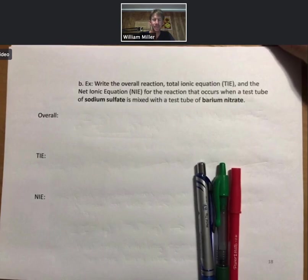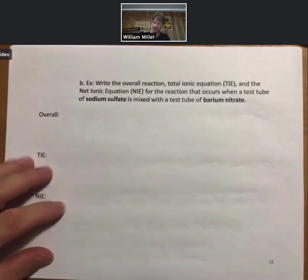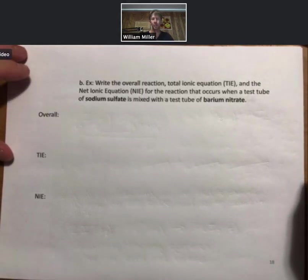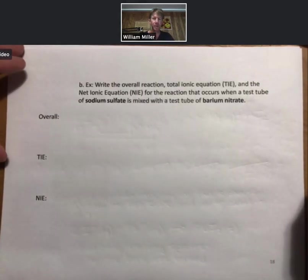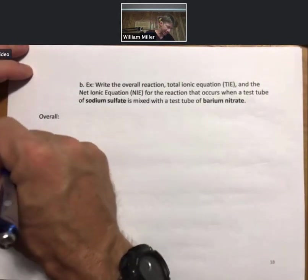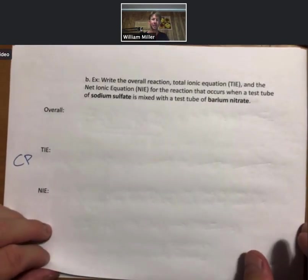On page 18, this is a second example of a double replacement reaction in which we work through the overall TIE and NIE, and this will be a companion problem.